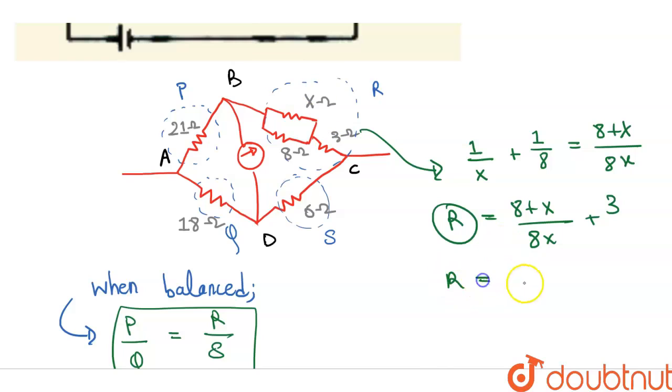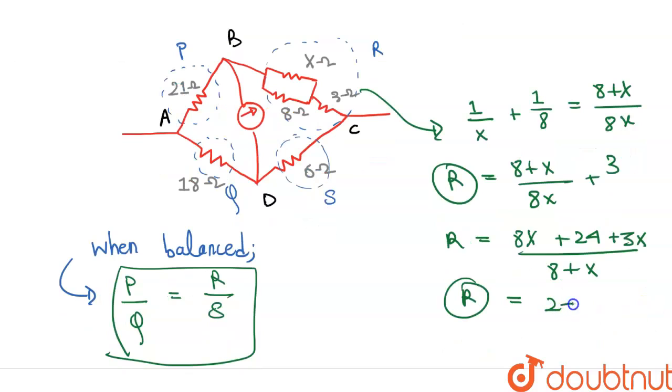So R is equals to 8X plus 24 plus 3X over 8 plus X. Finally we can write 24 plus 11X over 8 plus X. So this will be our R equivalent.